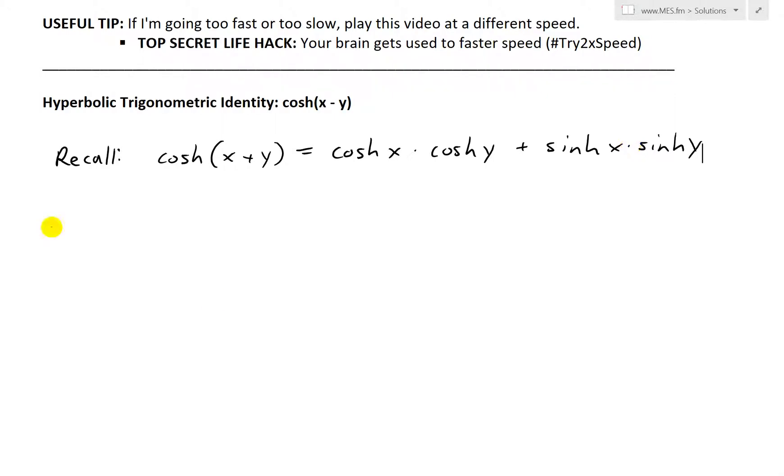What we'll do is we'll put in cosh x minus y. So all we're doing is putting in the y as negative. That would equal to cosh x times cosh negative y, and then plus sinch x times sinch negative y. So that's the only thing that's going to change.